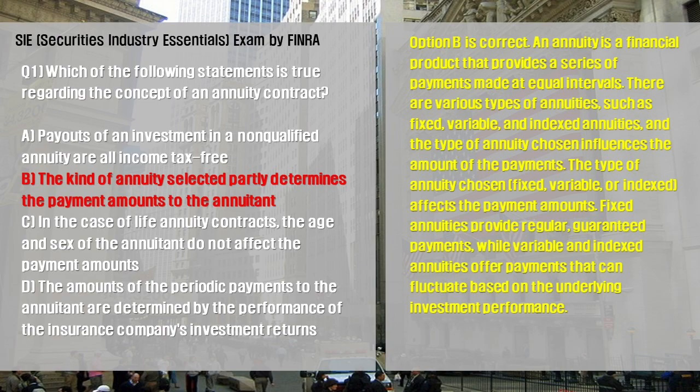Option B is correct. An annuity is a financial product that provides a series of payments made at equal intervals. There are various types of annuities, such as fixed, variable, and indexed annuities, and the type of annuity chosen influences the amount of the payments.